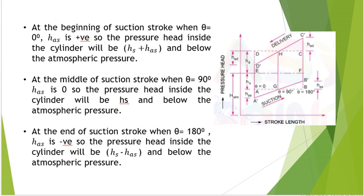At all points during the suction stroke — whether θ = 0°, 90°, or 180° — the pressure head remains below the atmospheric pressure head line. However, it changes with the value of θ: at θ = 0° the suction head is Hs + HAS; at θ = 90° it is Hs; and at θ = 180° it is Hs − HAS.